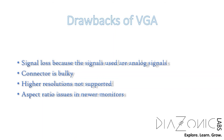Considering all these major drawbacks, use VGA only if your monitor or computer has no other interface available. Anything apart from VGA would be better — even a DVI interface would be a lot better, because it includes a digital input or output, which would at least mitigate the first drawback of signal loss. VGA is a legacy technology introduced 30–35 years ago. It was outdated 10 years ago, and people are still using it. Use it only if there is no other option.